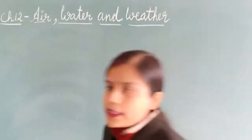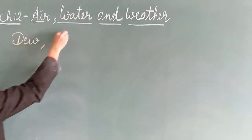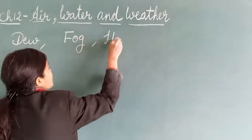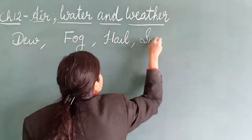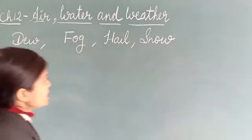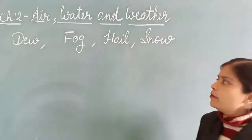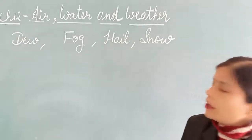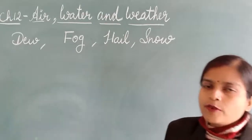Today we are going to deal with the topics: dew, fog, hail, and snow. These are also forms of water. Water exists in three forms: solid form, liquid form, and gaseous form. Here we are going to deal about the solid form of water, and some liquid form of water also.